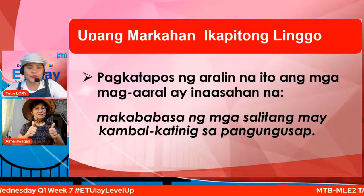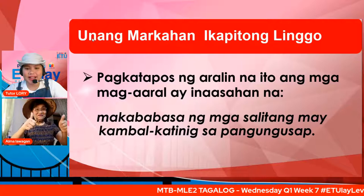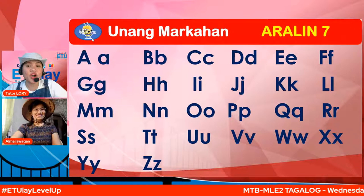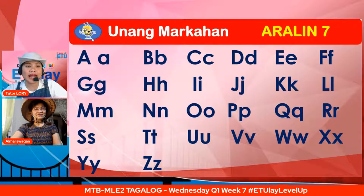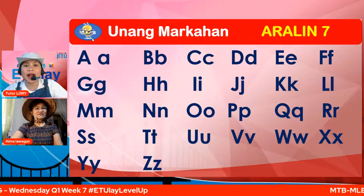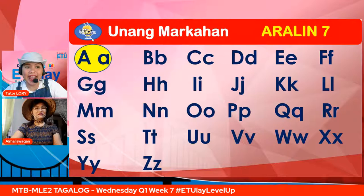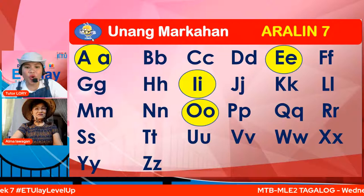Para tayo lalong maging handa, nais ko muna kayong bigyan ng pagkakataon na pag-aralan muli natin ang alpabetong Pilipino. Tandaan ninyo ang mga ito — ito ay mga alpabeto. Ang alpabeto ay may dalawang pangkat: ang pangkat ng patinig at katinig. Tignan natin ang mga bibilugan. Ang unang titik ay letrang A, pangalawa ay letrang E, letrang I, letrang O, at letrang U. A, E, I, O, U.